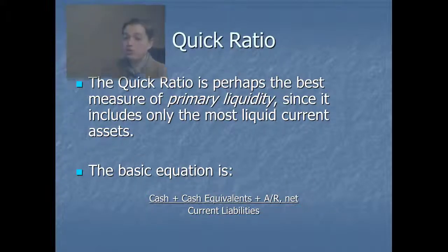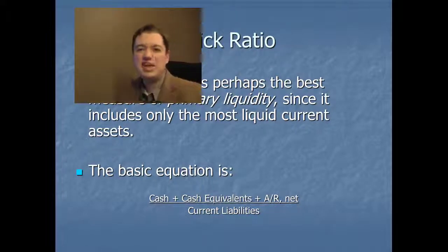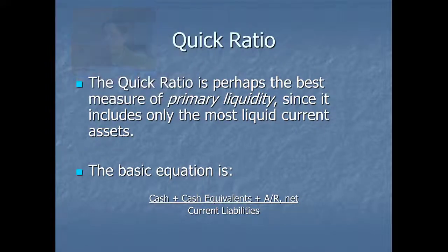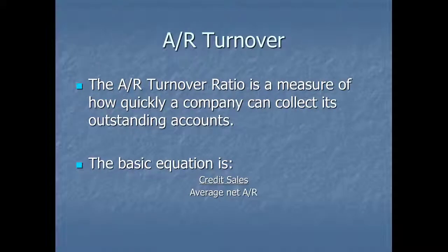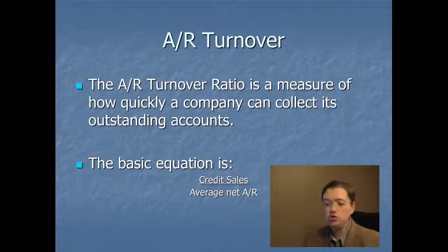There's really no set rule of thumb for the quick ratio — unlike the current ratio where we wanted around two, the quick ratio depends on your industry and past history. The other key ratio is accounts receivable turnover, a measure of how quickly we turn our receivables into cash. That's credit sales — or net sales if you don't know the credit sales number exactly — divided by average net accounts receivable, again taking out the allowance for bad debt. There's no rule of thumb here either, but bigger is usually better because it means we're turning things into cash much faster.